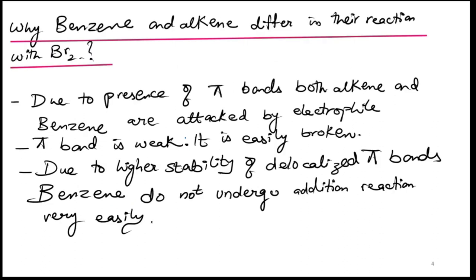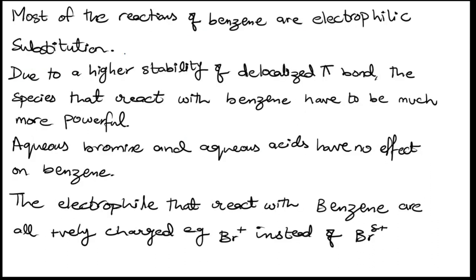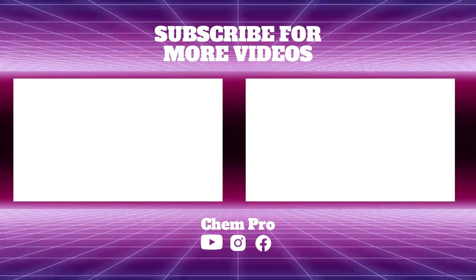Now the other thing: Most of the reactions of benzene are electrophilic substitution. Due to a higher stability of delocalized pi bond, the species that react with benzene have to be much more powerful. Aqueous bromine and aqueous acids have no effect on benzene. The electrophiles that react with benzene are all positively charged, for example Br+ instead of Br partial positive.